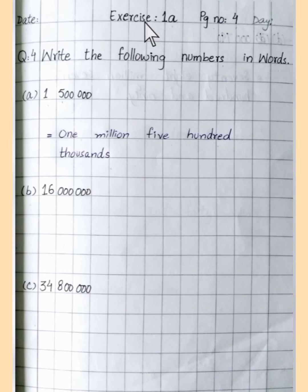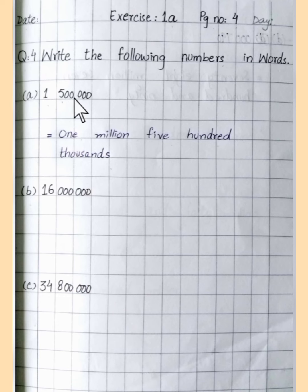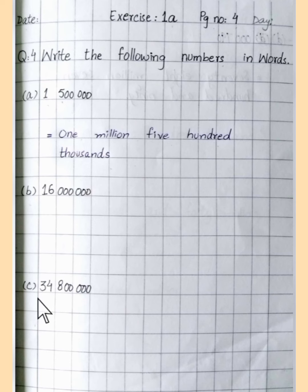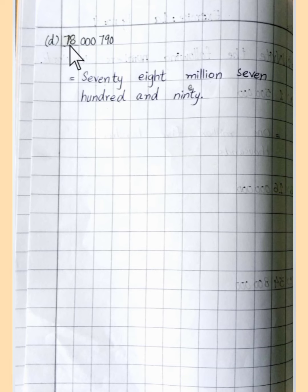Draw the headline and margin and put the date, day, exercise 1A, page number 4. On page number 4, question number 4: write the following numbers in words. Part A: 1,500,000 — we write this as one million five hundred thousand. Part B: 16 million — this is your answer which you write yourself. Part C: 34 million eight hundred thousand — solve this yourself. Part D: 78 million 790 — students, kindly complete your work on time and write neat and clean.